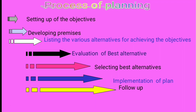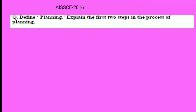So there are seven steps of planning: setting up the objective, developing premises, listing the various alternatives for achieving the objective, evaluation of the best alternative, selecting the best alternative, implementation of the plan, and follow up. All steps must come one by one in sequence — no skipping is allowed and the sequence cannot be changed, otherwise the process cannot be followed properly.